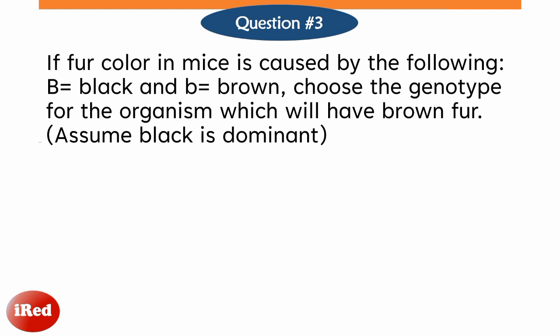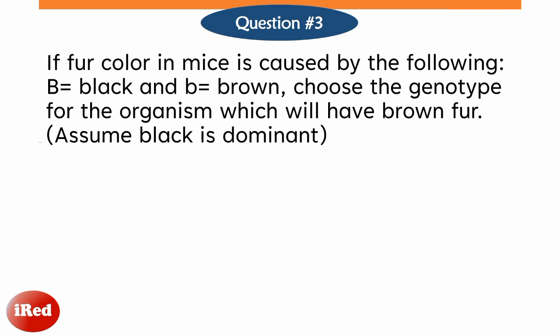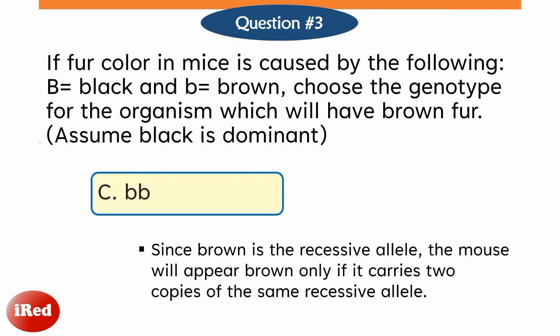If fur color in mice is caused by the following: capital letter B for black and lowercase B for brown, choose the genotype for the organism which will have brown fur. The correct answer is letter C. Since brown is the recessive allele, the mouse will appear brown only if it carries two copies of the same recessive allele.